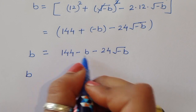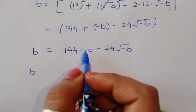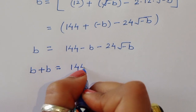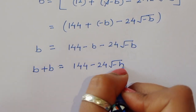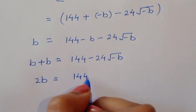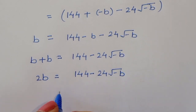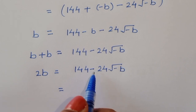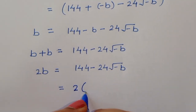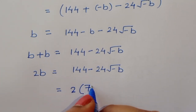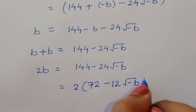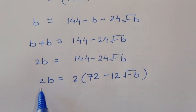Bringing -b to the left side gives b + b = 144 - 24√(-b), so 2b = 144 - 24√(-b). We can factor out 2 on the right-hand side: 2b = 2(72 - 12√(-b)).